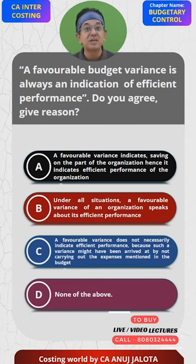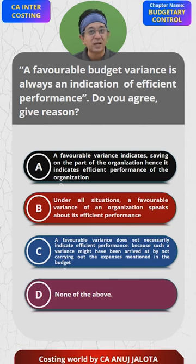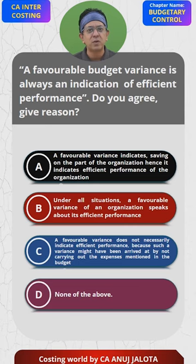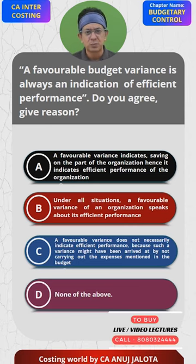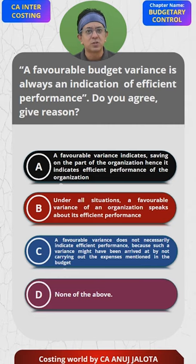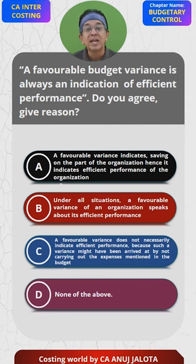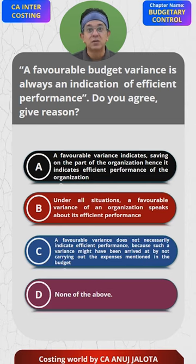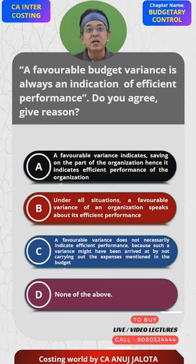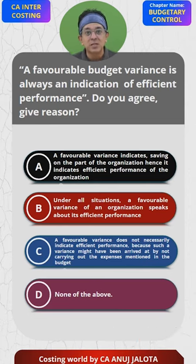Let me give you one more example — wage rate variance. Workers had to be paid at the rate of 5 rupees, but they were paid at the rate of 4 rupees. So wage rate variance will be favorable. Does it mean that the workers or the manager responsible for wages has done good? No. It could be that he employed unskilled workers in place of skilled workers, and that is why he paid them less.